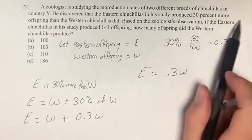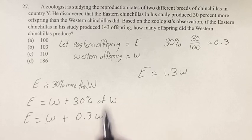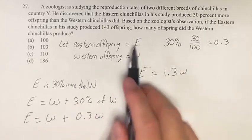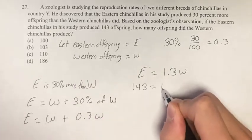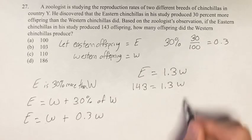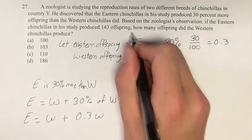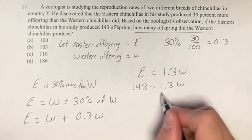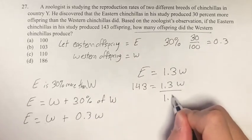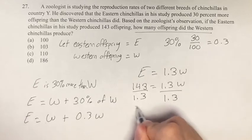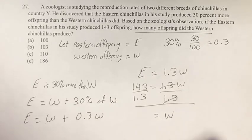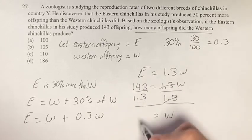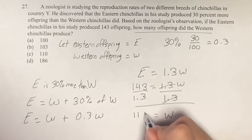We're told that the eastern chinchillas produced 143 offspring. We set that to be E, so E is 143, and this is equal to 1.3W. We're solving for W because we're looking for how many offspring the western chinchillas produced. So dividing both sides by 1.3 cancels these out, and we're just left with W. Our answer is 143 divided by 1.3, which is 110.